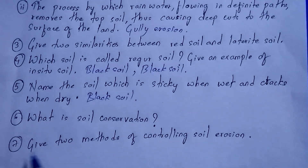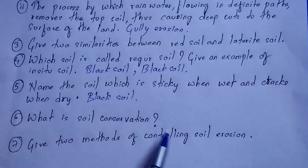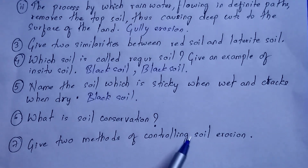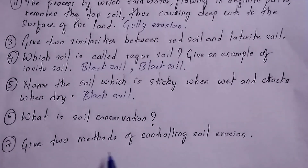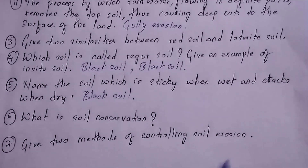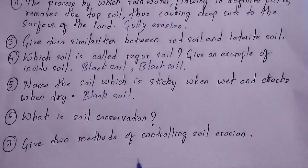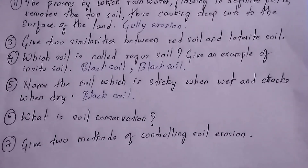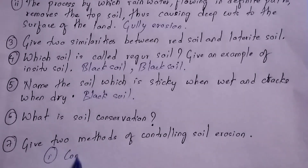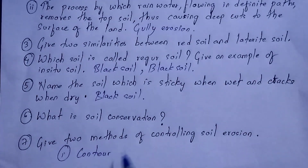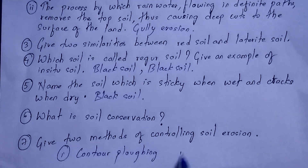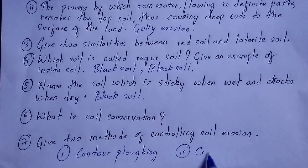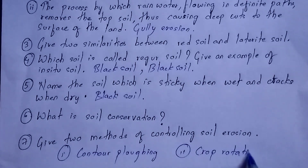Question number seven: give two methods of controlling soil erosion. There are many methods, but two key ones are: first, contour ploughing, and second, crop rotation. There are many other methods as well — you can check your book and write any two.